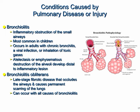Bronchiolitis obliterans is more of a late-stage fibrotic change — permanent scarring of the lungs or airway changes. It can occur with all causes of bronchiolitis, but it's more of a chronic late-stage finding seen with progressive bronchiolitis.